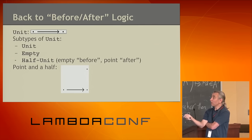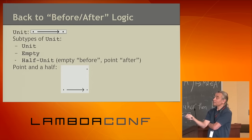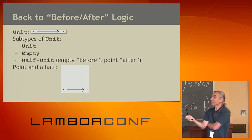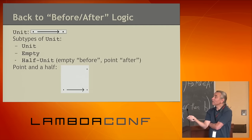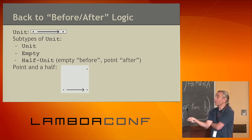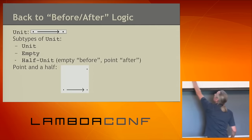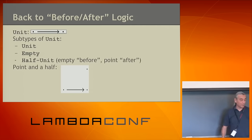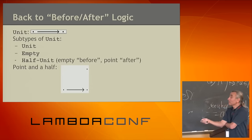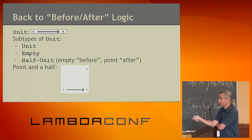What's the unit — the top? It's just one point yesterday and one point today. How many subtypes does this unit have? There's the unit itself, the empty subtype, and also a 'half unit': nothing yesterday but something today — an empty set yesterday and a point today. That's an example of a type we can call 'point and a half': one instance yesterday, two instances today.